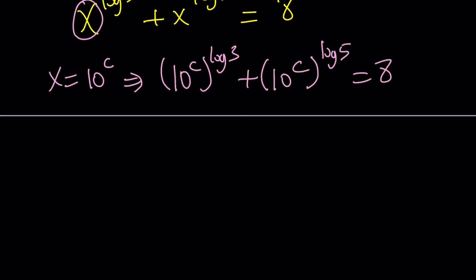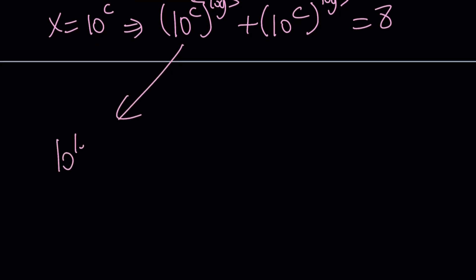So here's what I can do. These exponents are multiplied, so they could be switched around. There's basically two ways to look at it. One way is just switch these around, 10 to the log 3 to the c, and 10 to the log 5 to the c. So switch these around, and then that's equal to 8.